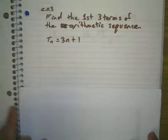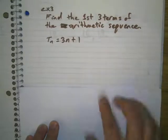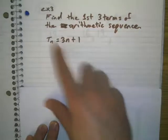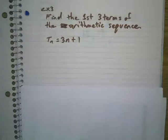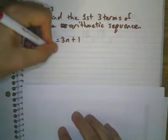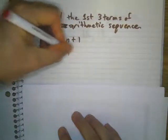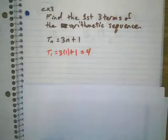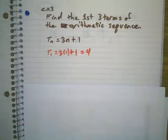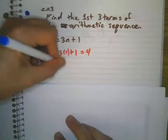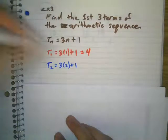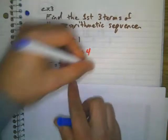Let's look at some more examples. Find the first three terms of the arithmetic sequence. Here's a function they give you. Just like we did yesterday, I'm going to plug in 1 for n: t sub 1 = 3 times 1 plus 1, which gives 4. Next, t sub 2: plug in 2 for n — 3 times 2 plus 1 is 6 plus 1, which is 7.